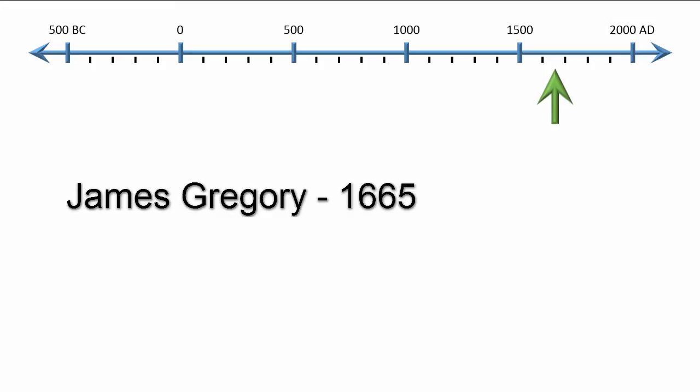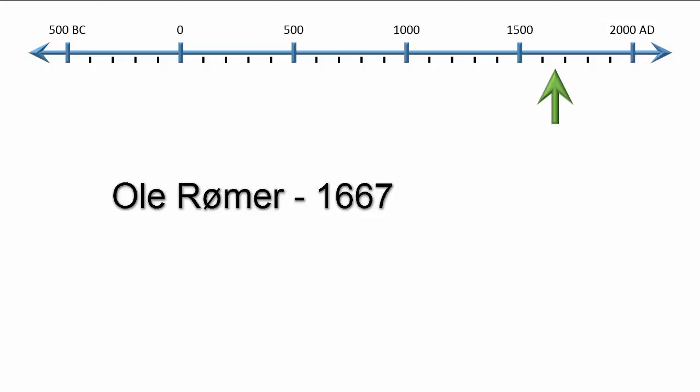In 1665, the mathematician James Gregory was the first to observe diffraction by using a feather as a diffraction grating. Two years later, in 1667, Ole Rømer calculated the speed of light by observing the moons from Jupiter, although the value he got was about 26% lower than the true value.